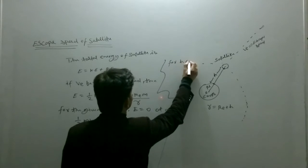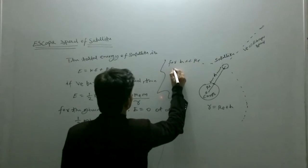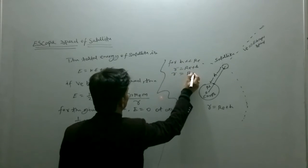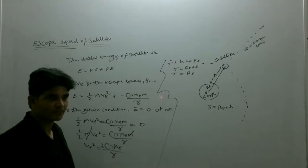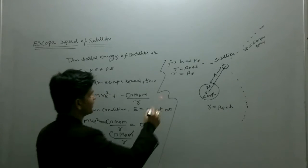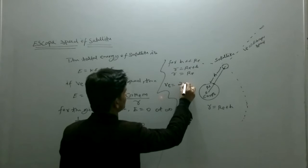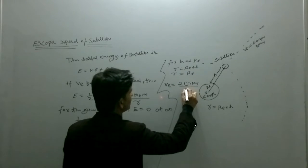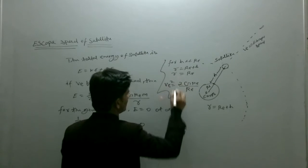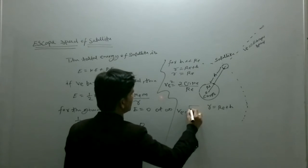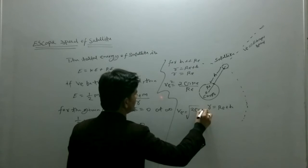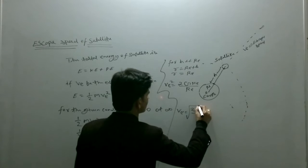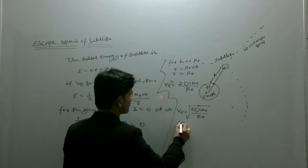For h is much less than R_e, therefore r equals to R_e plus h, which is approximately R_e. Then v_e is equals to square root of 2GM_e upon R_e.